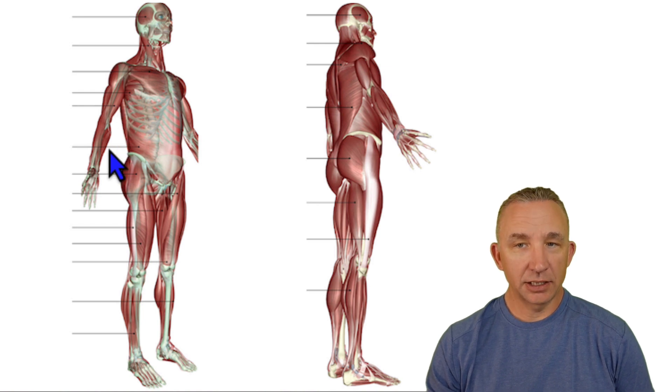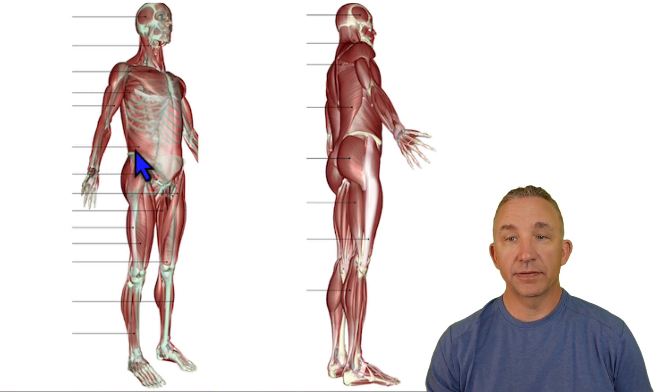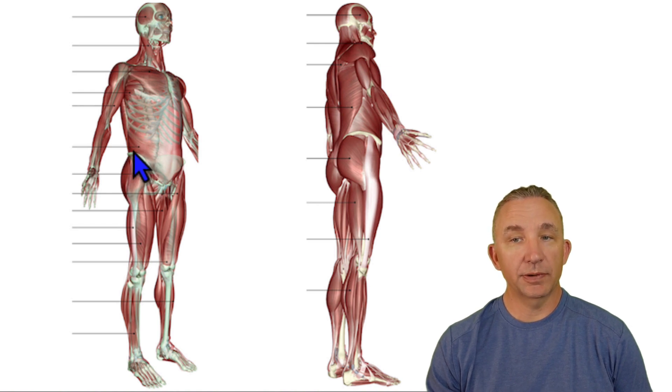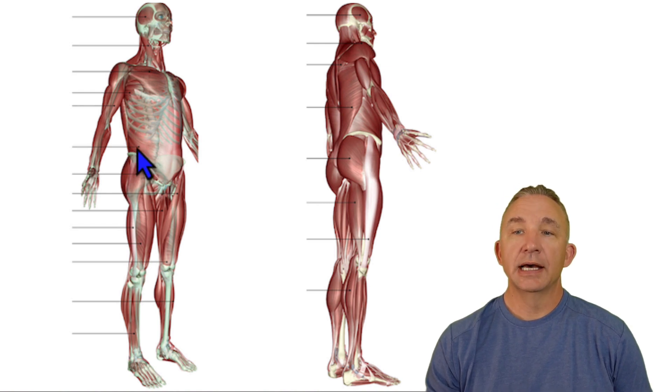Looking at a major abdominal muscle — we'll do a video later to break down abdominal muscles — but the most superficial is external oblique.